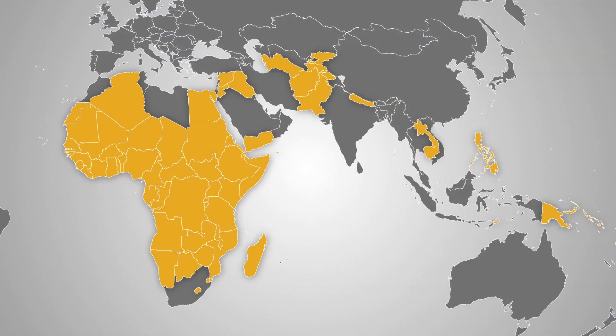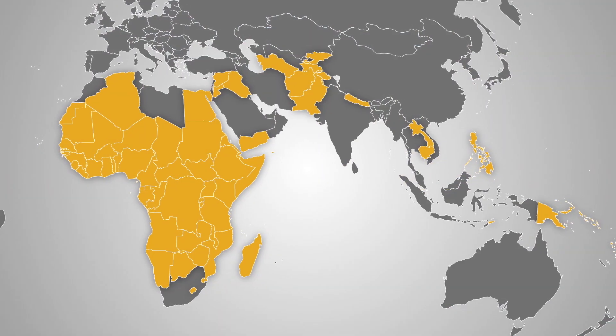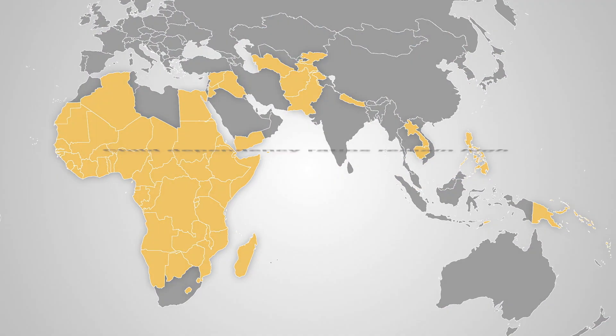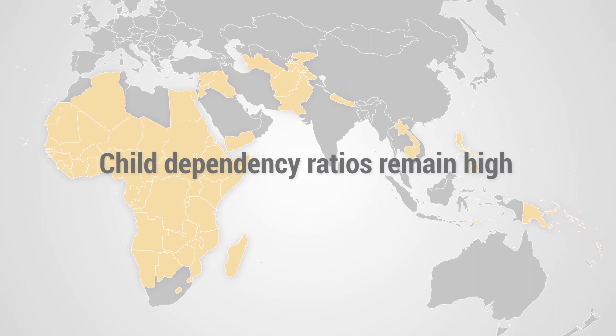In most of Sub-Saharan Africa and parts of Asia, child dependency ratios remain high. To accelerate reductions in the child dependency ratio, countries in this category could invest in efforts to improve child survival, increase access to voluntary family planning, and encourage girls to stay in school.